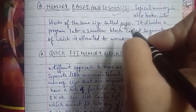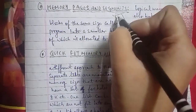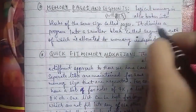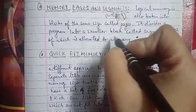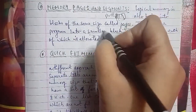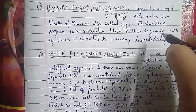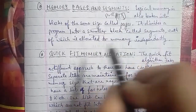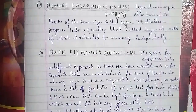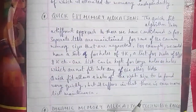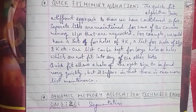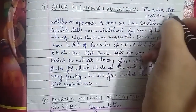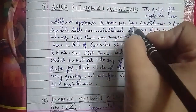Quick fit memory allocation: the quick fit algorithm takes a different approach. Separate lists are maintained for some of the common memory sizes requested. For example, a list of holes of 4KB and a list of holes of size 8KB. One list can be kept for large holes that don't fit into the other lists. Quick fit allows a hole of the right size to be found very quickly, but it suffers from more list maintenance overhead.